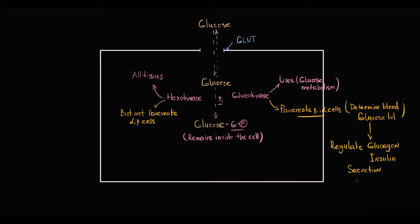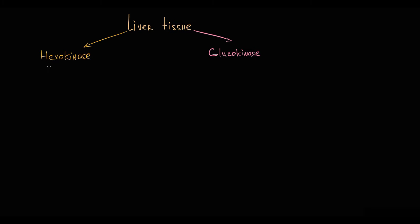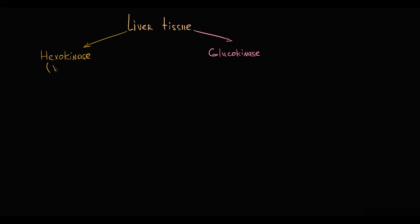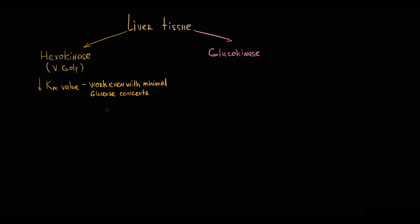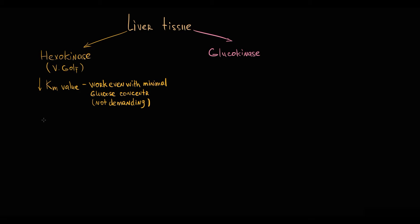Let's take liver tissue, because it's basically the only tissue with both hexokinase and glucokinase. When we talk about hexokinase, we can imagine a casual inexpensive car, like a Volkswagen Golf. Because this enzyme has a low Km value, it picks up and phosphorylates glucose even if glucose concentration in the tissue is low. If the enzyme is a car and glucose is gasoline, this enzyme does not demand a huge amount of glucose, just as a budget car doesn't demand a huge amount of gasoline.